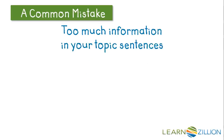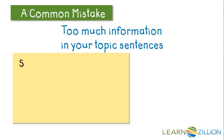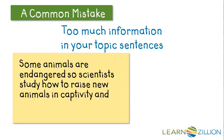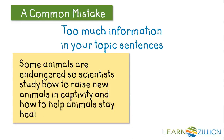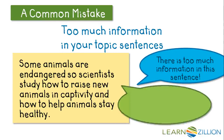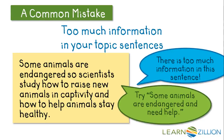Here's a common mistake. Sometimes we try to cram too much information into the topic sentences. Here's an example: "Some animals are endangered, so scientists study how to raise new animals in captivity and how to help animals stay healthy." There's just too much information in that topic sentence. So I might want to try something simpler, like, "Some animals are endangered and need help."